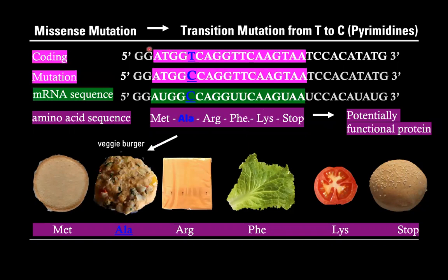In a missense mutation, this is when we have an initial amino acid that then gets mutated into a different amino acid. In this case it was valine, which is now alanine, and this gives us a veggie burger instead of a hamburger.